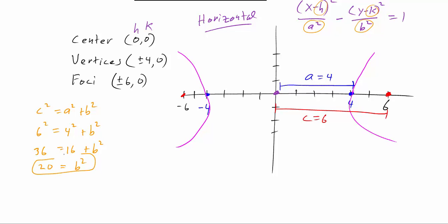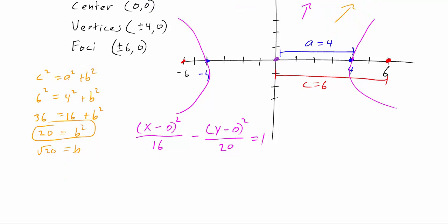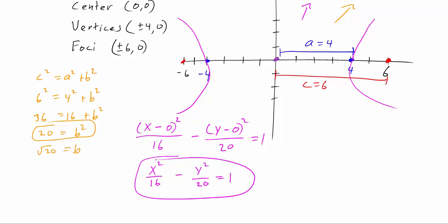We end up with 36 = 16 + b², so b² = 36 − 16 = 20. We can actually stop here because we don't need b itself — we're simply looking for b² in the formula. So we plug in everything: (x − 0)² / 16 − (y − 0)² / 20 = 1, which simplifies to x² / 16 − y² / 20 = 1. And here we have the standard form of our equation.